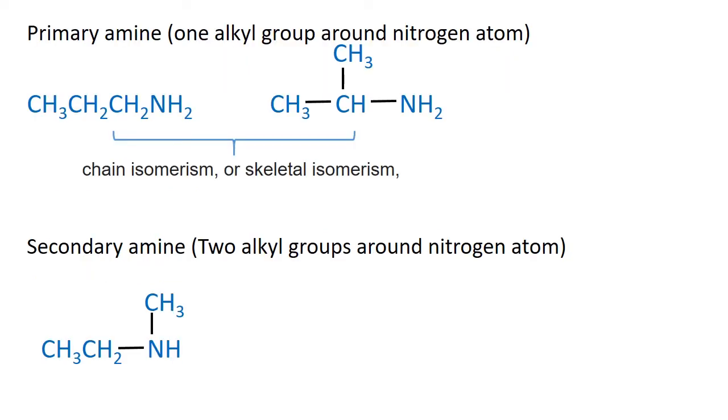First we draw isomers of primary amine. In primary amine, nitrogen atom is joined with a single alkyl group. In first isomer, there is only one carbon chain in the molecule. By changing the structure of carbon chain, we can obtain total of two primary amines.